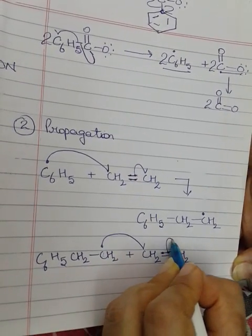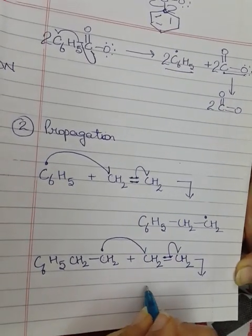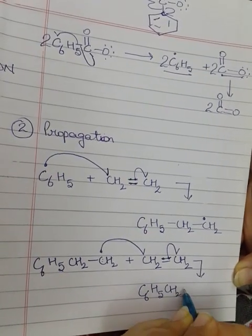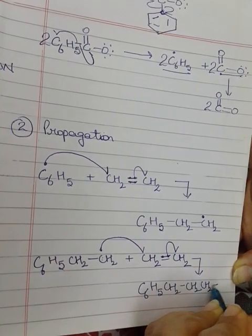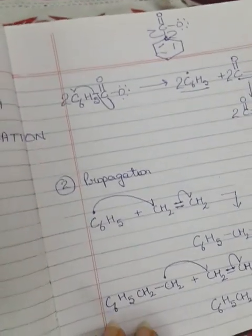C6H5CH2CH2, it will further attack on another ethene molecule. It is attacking on this carbon. Again there are two electrons on this bond. This carbon will take up its electron and form bond with this carbon, and this electron will move to its respective carbon. Like this propagation will go on.